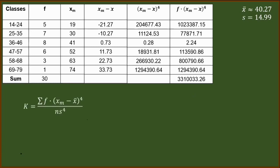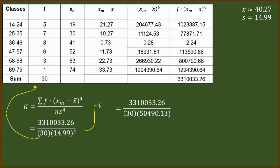We will now recall the formula for kurtosis for group data. This part, this numerator, is this last entry for the last column. We have 3,310,033.26 divided by, we have 30 here. 30 came from this, the sum of the frequency. We have 30 members of the data set. And then, 14.99 is this standard deviation. Next, we continue here. We get the fourth power of the standard deviation, 14.99 to the fourth. It will give us 50,490.13. Multiplying that to 30, we'll have 1,514,703.90.